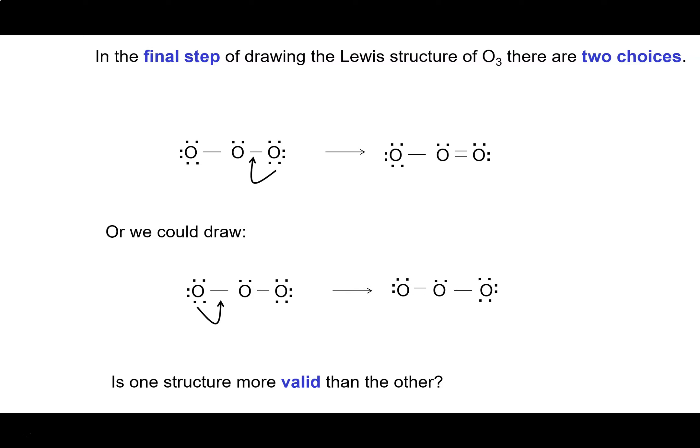In that final step of drawing the Lewis structure for ozone, there were 2 choices. We could bring the lone pair in from the right or from the left. One is not any better than the other. They both use up the electrons that are available and they both result in every atom having an octet. So is one structure more valid than the other? We'd have to conclude no. They are identical.